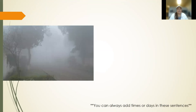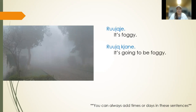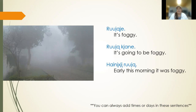Sometimes it's like this outside in the morning or early evenings — it is 'rujangjade,' which means foggy. Add the jay to the end and that makes it currently happening. 'Rujang' by itself is fog; 'rujangjade' means it's foggy as the weather condition. It's going to be 'rujangjade' — it's going to be foggy. And then 'hainichji rujangjade' — 'hainichji' means early this morning. Early this morning, it was foggy.